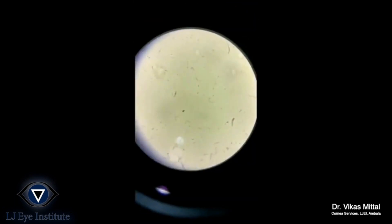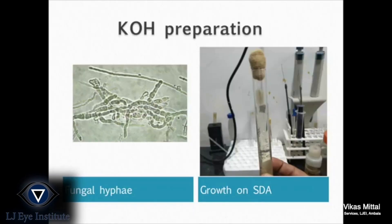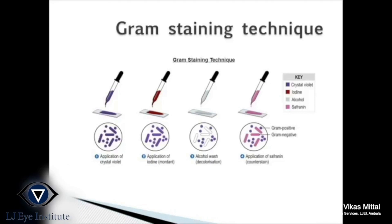These are the fungal hyphae seen on KOH mount, along with growth of the same hyphae on Sabouraud's dextrose agar. Gram staining is done as per the standard protocol.